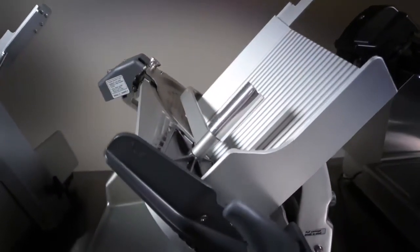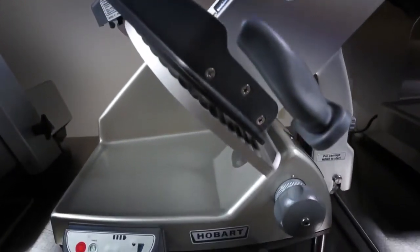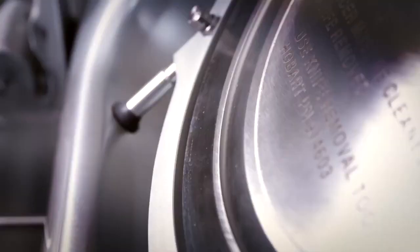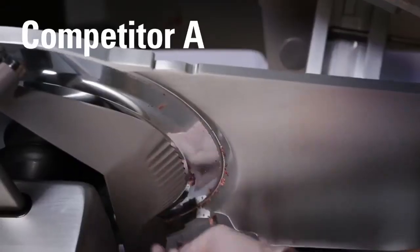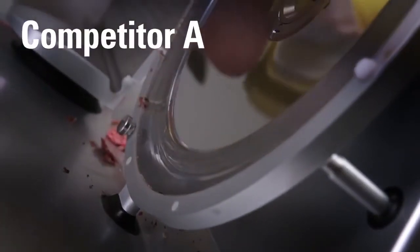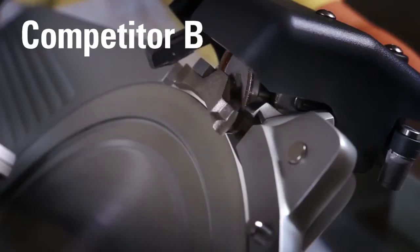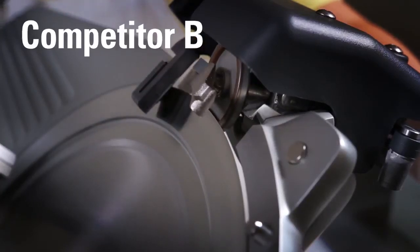With the HS9, precision comes standard, thanks to its exclusive 13-inch clean-cut knife. While lesser knives can quickly dull or pit, the clean-cut knife stays sharper, longer, for unmatched precision.